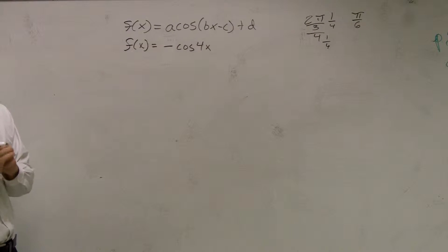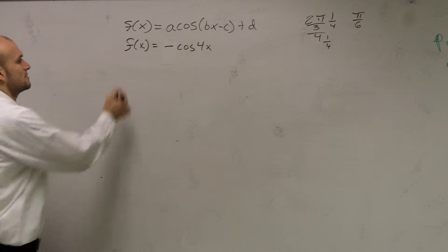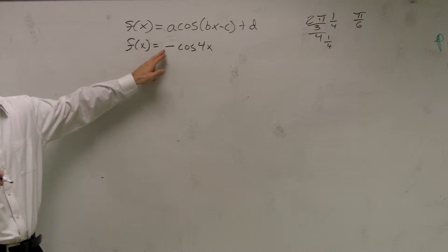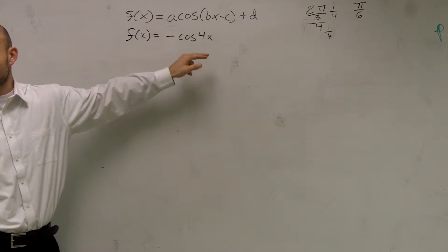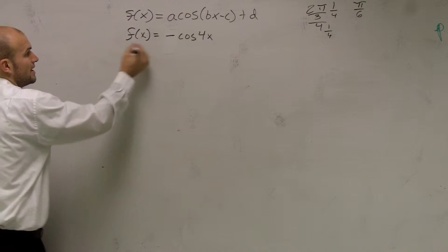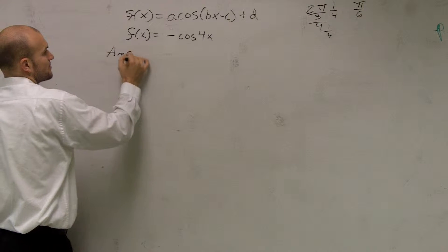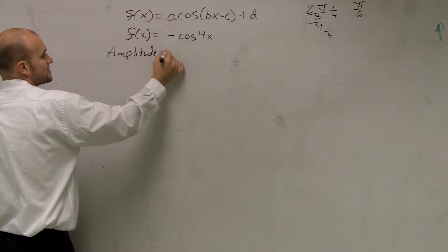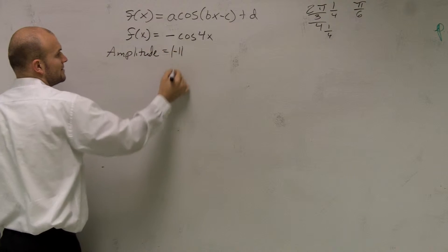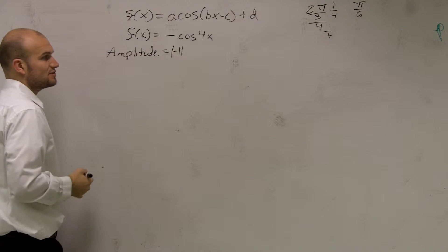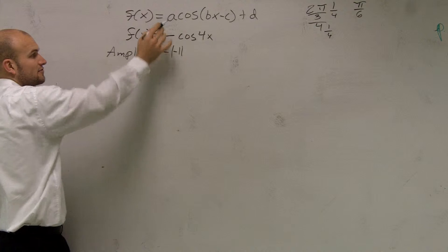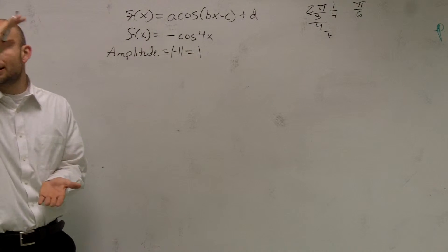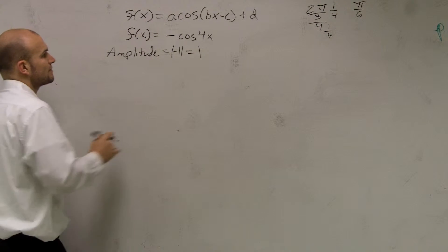So we have f of x equals negative cosine of 4x. A couple things we need to remember: whenever we have a negative in front of a function, we're going to have a reflection. Then I need to know what my amplitude is. That's going to be the absolute value of my a, which is absolute value of negative 1 — remember, the a is in front — so that's going to be 1. Therefore, I'm not going to be going any higher than the parent graph.